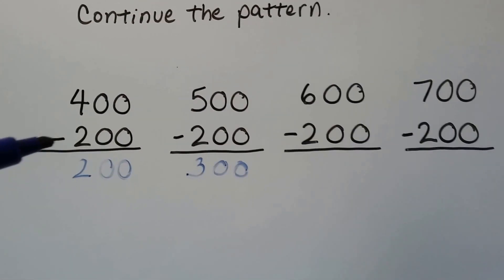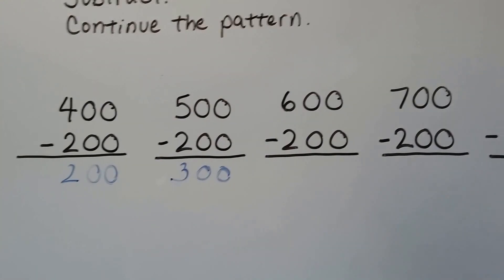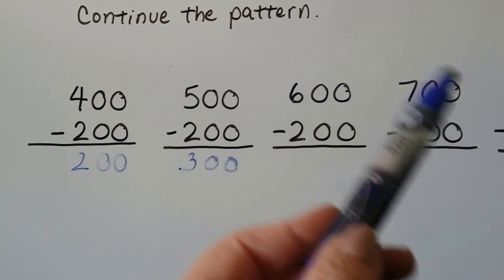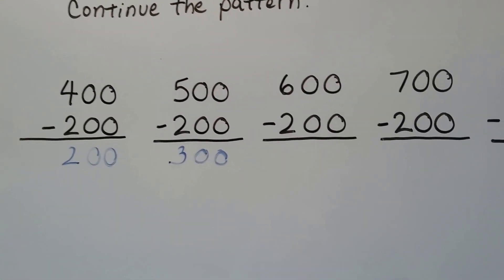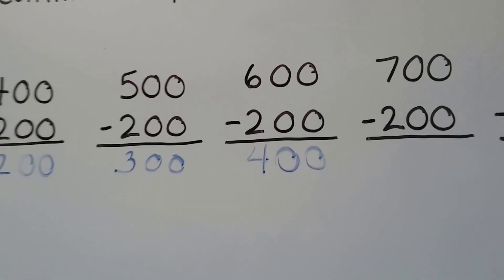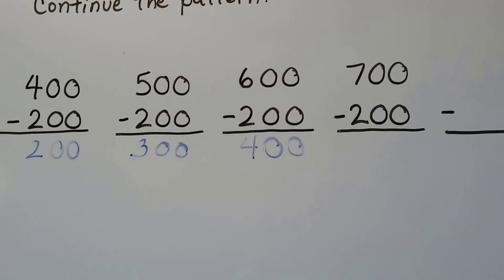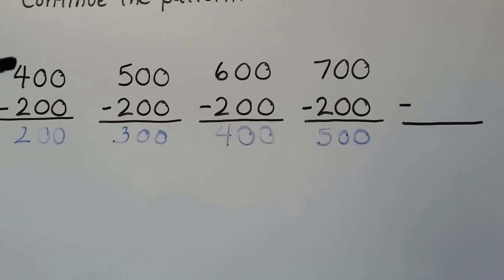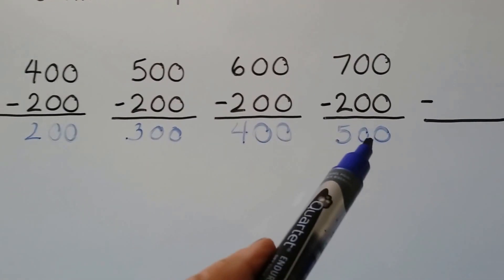Do you see what's happening with the numbers? They all have two hundred as the subtrahend — every single one is minus two hundred. But look at the minuend: four hundred, five hundred, six hundred, seven hundred — going up by hundreds, each one is another hundred more. The difference went two hundred, three hundred — and six minus two is four, so six hundred minus two hundred is four hundred. Our minuend goes up by a hundred, the subtrahend stays the same, so our difference goes up by one hundred each time.